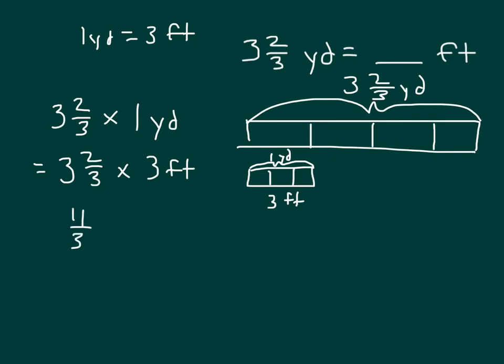That was three-thirds here, three-thirds there for three more feet, three-thirds there for three more feet, and two-thirds there. So we have eleven-thirds times three feet, which is equal to — if we cancel — eleven feet, just as I had stated before.